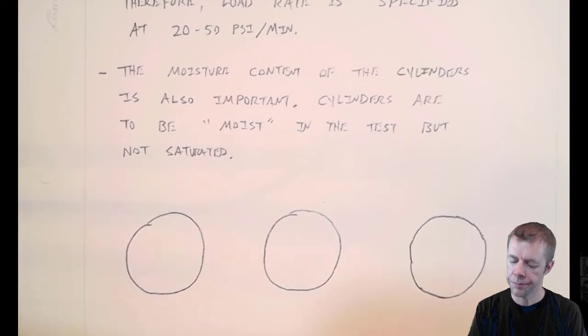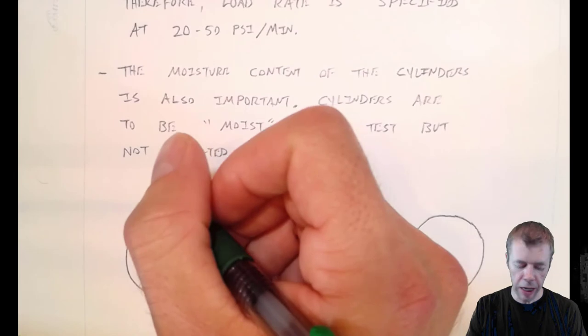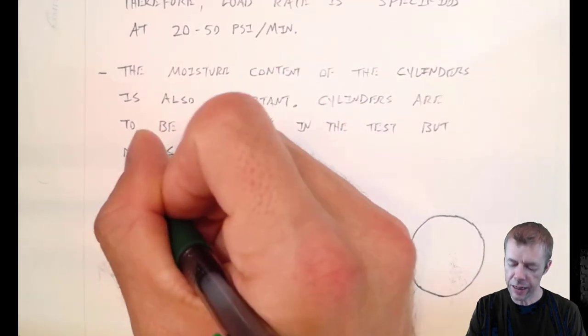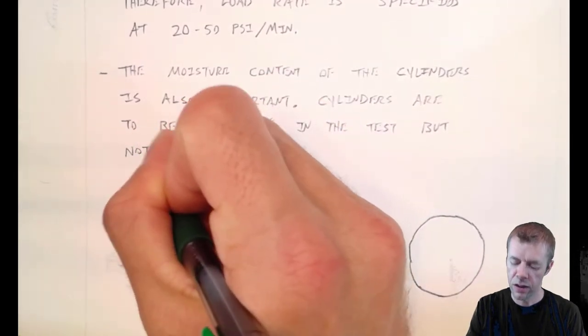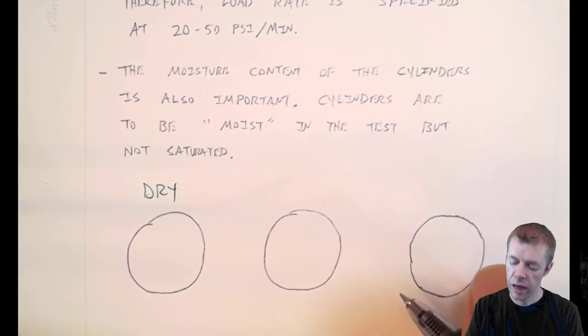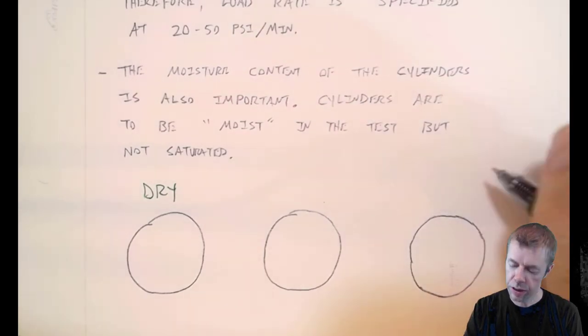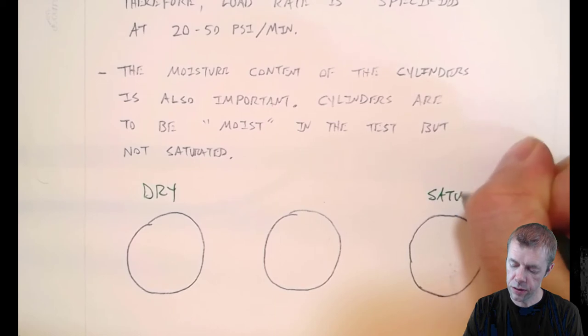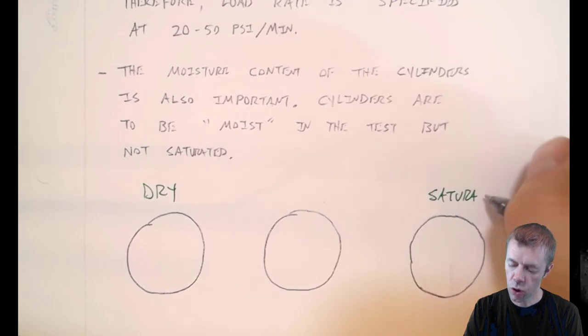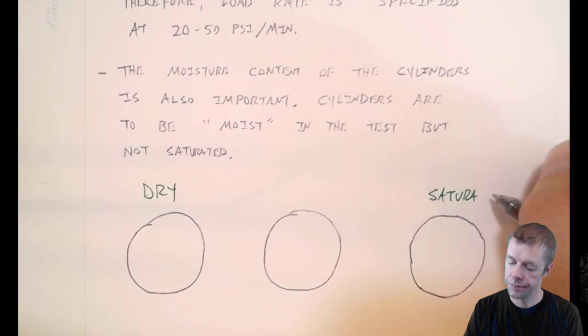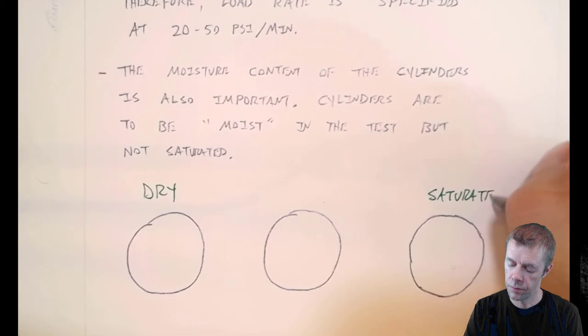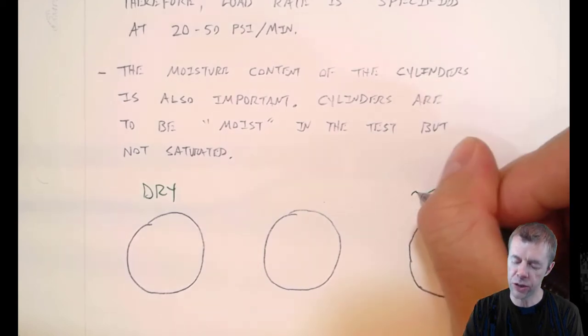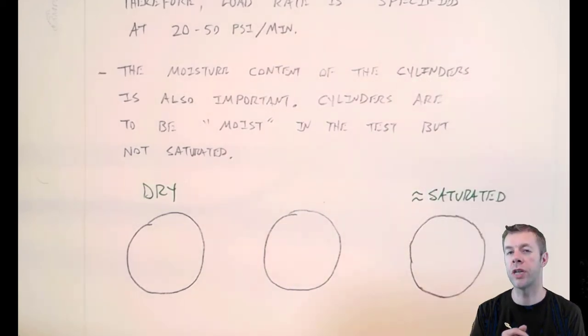Why is that? Let me explain. If I've got a sample here that let's just say is dry, very, very dry. And I have a sample here that's saturated or close to saturated. Approximately saturated, just below saturation.